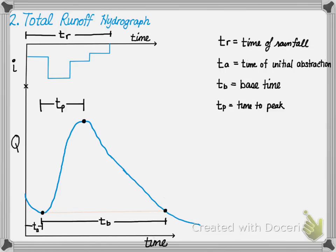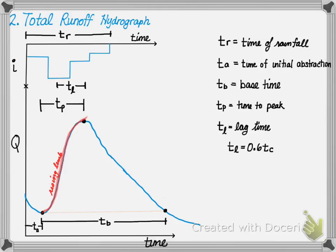Next, the time from when runoff begins to the highest point on the hydrograph is referred to as the time to peak. Finally, the lag time is the time from the center of mass of the excess rainfall to the peak. It explains the delay of water moving within a system. It can be calculated as follows: the lag time is 0.6 times the time of concentration. There are many other equations available for lag time; this is just one.